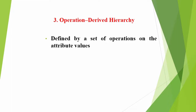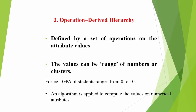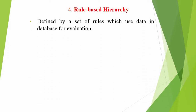The set undergraduate and postgraduate as 'all status'. Three: operation-derived hierarchy. This type of hierarchy is defined by a set of operations on the attribute values. The values can be a range of numbers or clusters. For example, the data values for GPA (grade point average) of students range from 0 to 10, and an algorithm is applied to determine the values of these attributes. This kind of hierarchy is defined for numerical attributes.